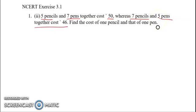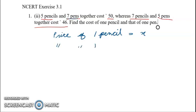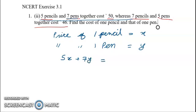We assume that the price of one pencil is equal to x, and we will assume that the price of one pen is equal to y. For the first situation, we have 5 pencils (5x) plus 7 pens (7y).